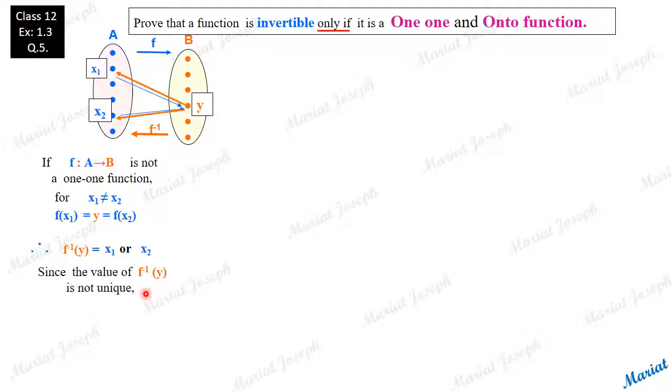Since the value of f inverse y is not unique, f inverse is not a function. So if inverse is possible, it exists only if f is one-one function. This assumption that we started with is not possible. If you go by that assumption, it gives a contradiction. The inverse is not a function. And if inverse is not a function, we cannot call f as invertible function.